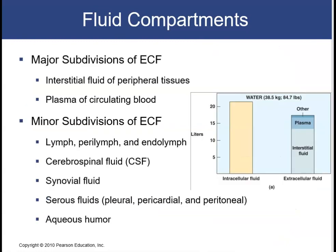Let's come back to the fluid compartments again, especially the ECF. The major subdivisions of the ECF are: interstitial fluid, which bathes our peripheral tissues; and the water contained in the plasma of our circulating blood. There is also another group — other sources of water — including the water in lymph, as well as perilymph and endolymph. Perilymph and endolymph are the fluids found in our inner ear. This group also includes water in the cerebrospinal fluid, in the synovial fluid of our joints, in the serous fluid between the pleural, pericardial, and peritoneal membranes, and the aqueous humor found in the eye.